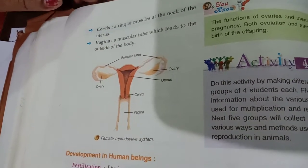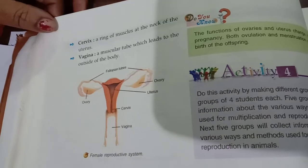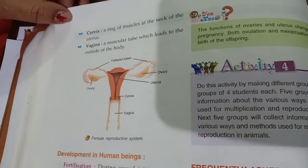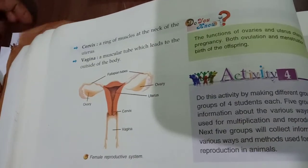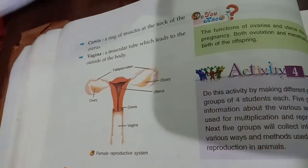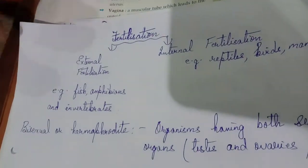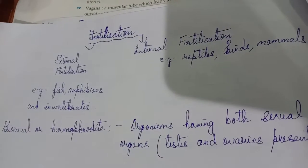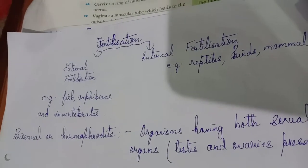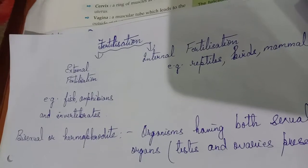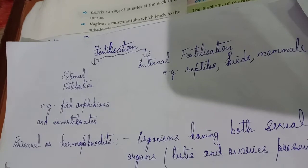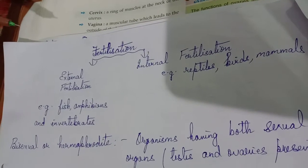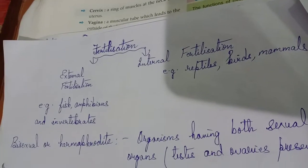Good morning, children. Let us begin our class with the topic: sexual reproduction in humans. In humans, sexual reproduction takes place by the process of fertilization. Fertilization is the process of fusion of the male gamete and female gamete. Fertilization can be of two types: external fertilization and internal fertilization.